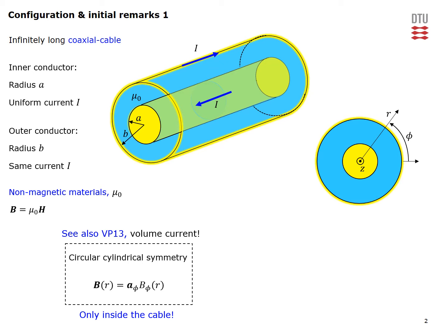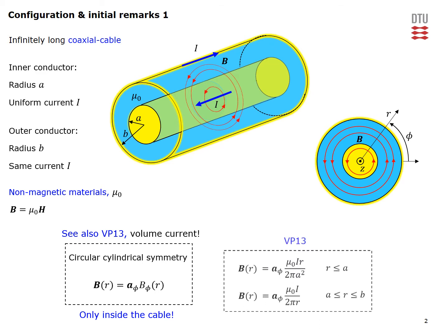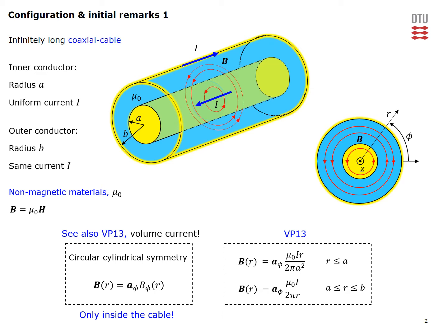Introducing a circular cylindrical coordinate system as shown, we know from video problem 13 that inside the cable the B field will only have a phi component and this component will only be a function of the radial coordinate. Inside means both within the inner conductor and in the space between the two conductors. We have also worked out expressions for the field in both of these regions.